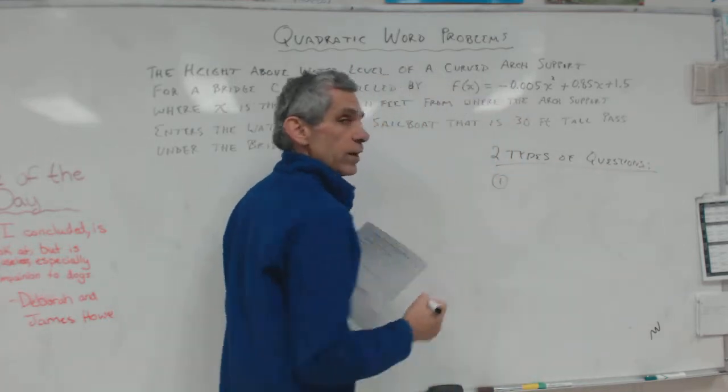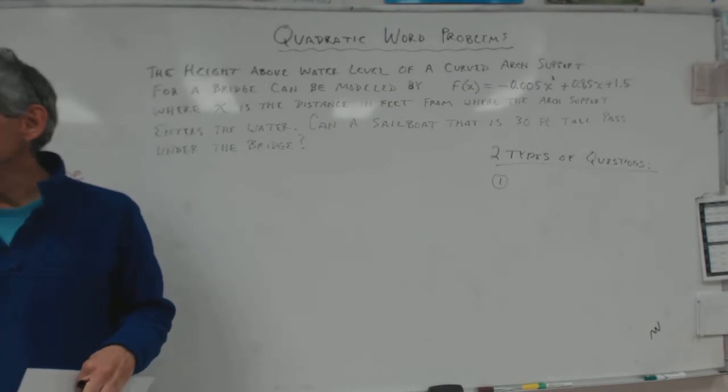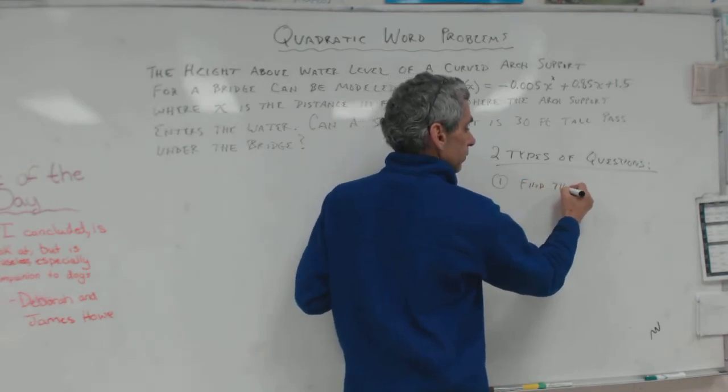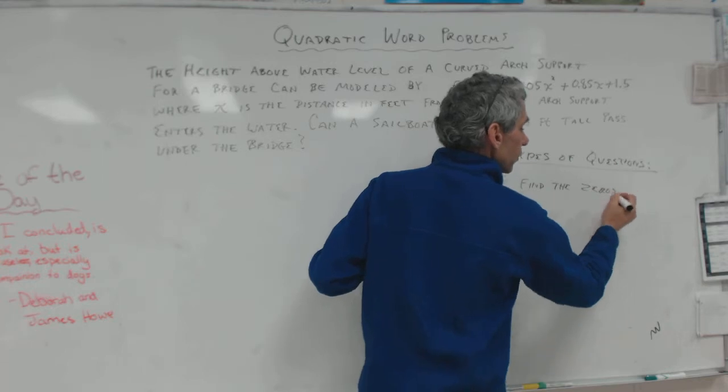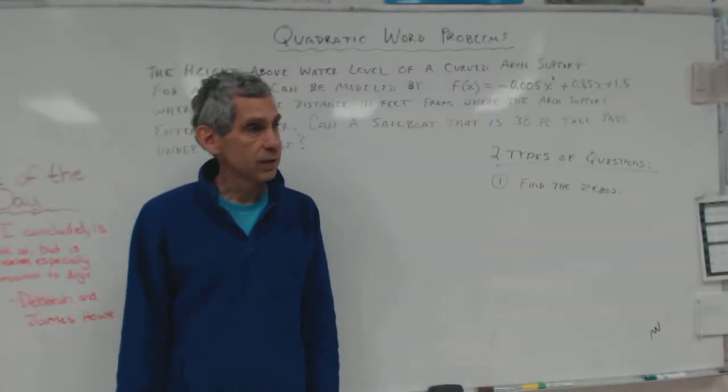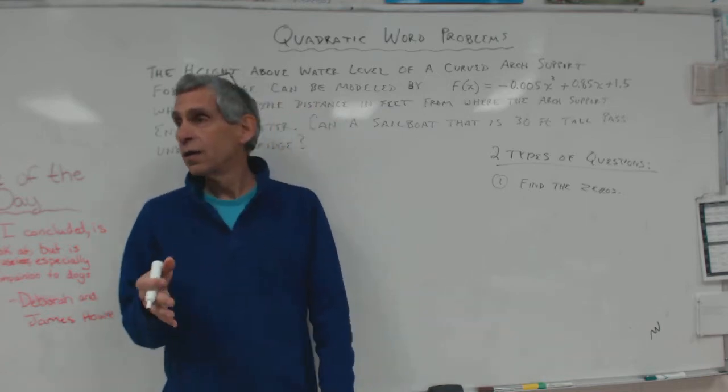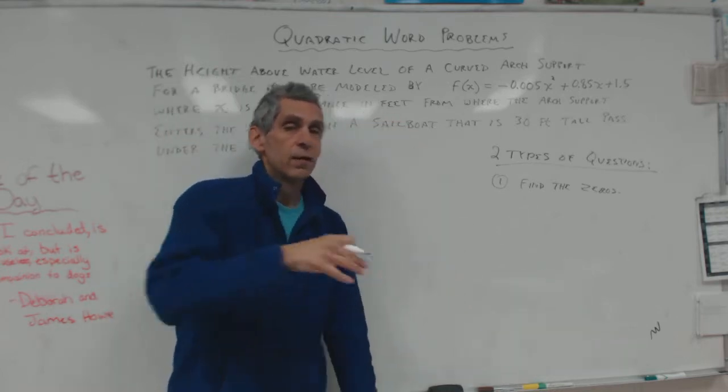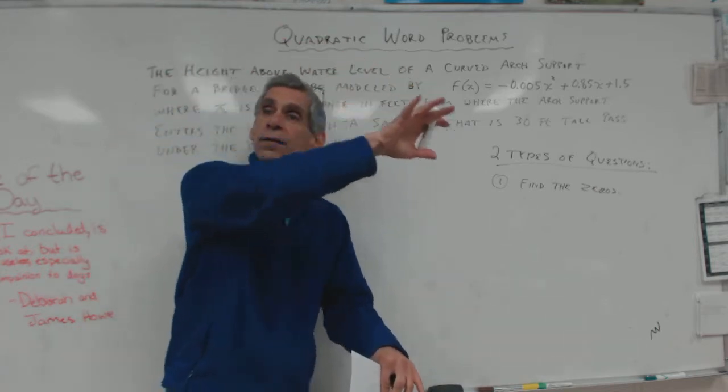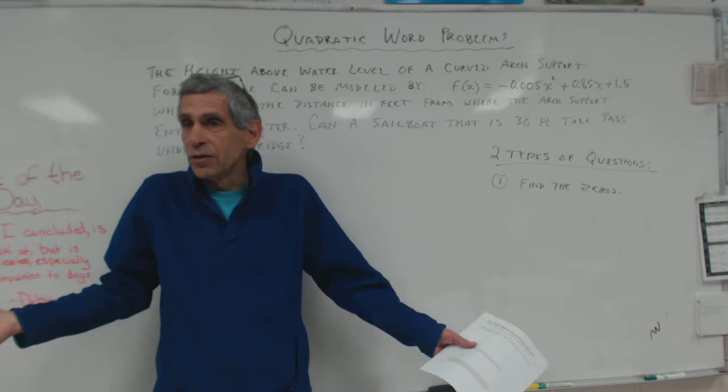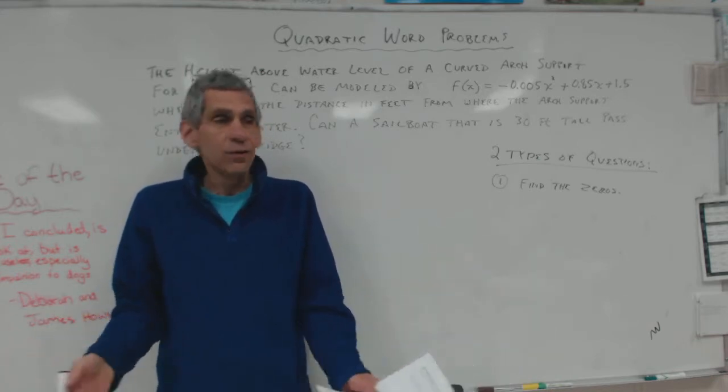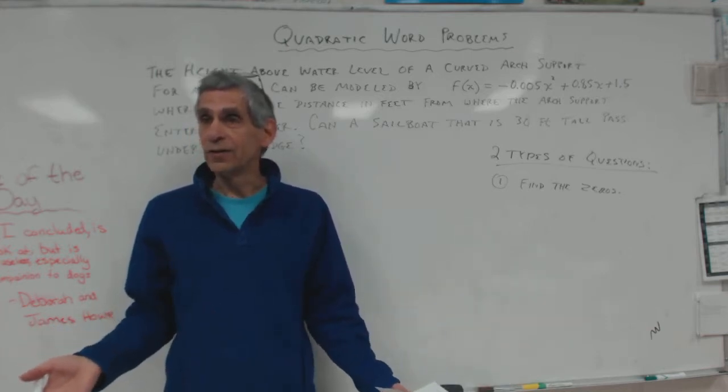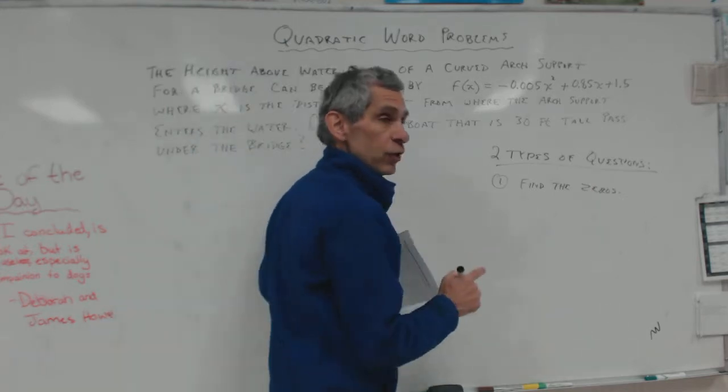Two types of questions. You can ask one, the questions that you guys already know, that you've been working on yesterday, last night. Find the what? The zeros. In other words, make h equal to zero and find x. Find the zeros. Find where the soccer ball hits the ground. Find where the porpoise lands back into the water. Find where the arrow lands on the ground. Those are the zeros.